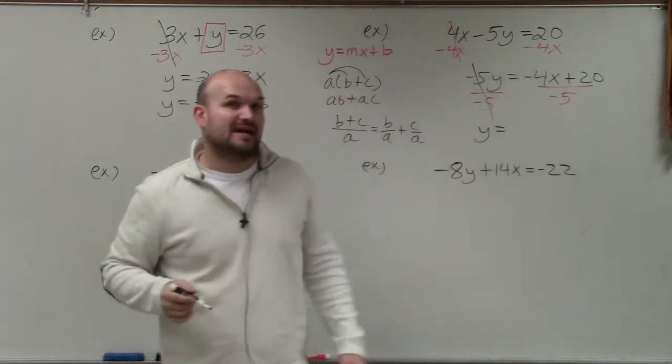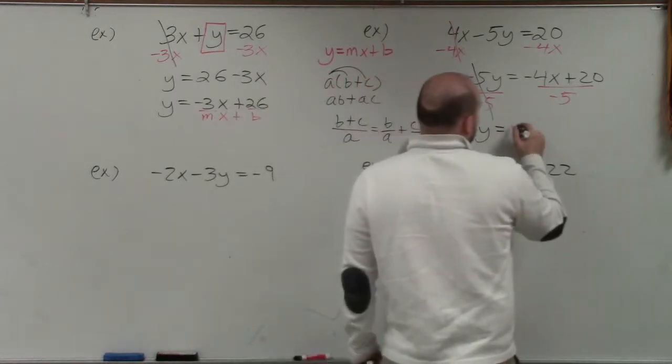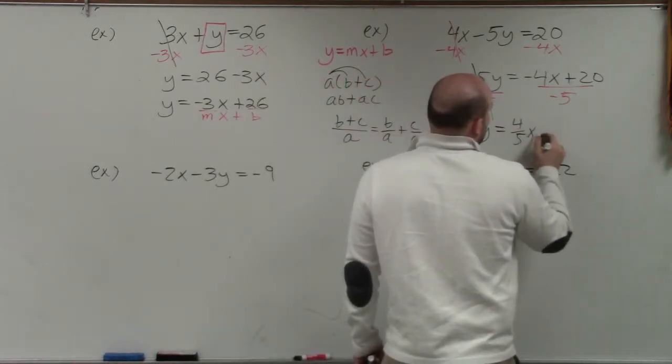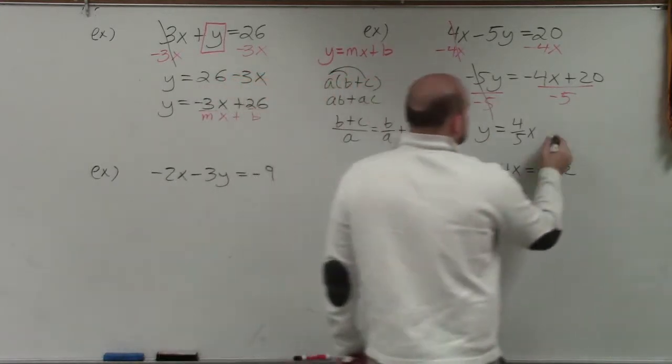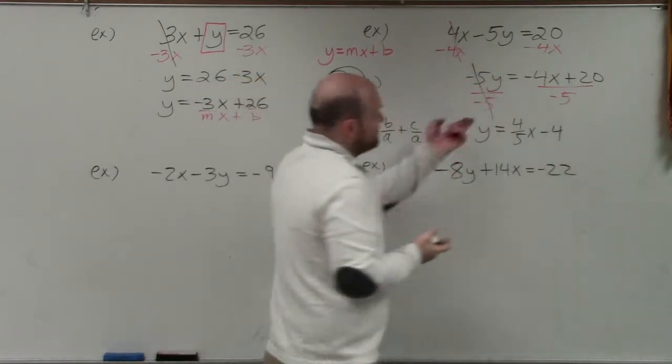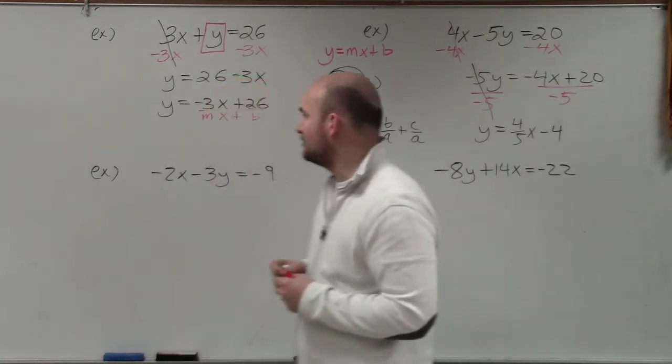I can't divide a 5 into a negative 4, so therefore, I just leave it as a fraction. I'm going to leave that as a positive 4 fifths x. But negative 5 does divide into 20, which would be negative 4 times. And now you can see my equation is now written with its y variable solved.